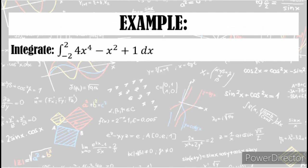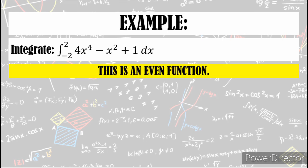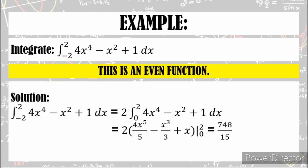Let's have some examples. Integrate 4x^4 minus x squared plus 1 dx from negative 2 to 2. First check: this is an even function. So the solution is 2 times the integral of 4x^4 minus x squared plus 1 dx from 0 to 2. By the power rule: 2 times (4x^5 over 5 minus x cubed over 3 plus x), evaluated from 0 to 2. Substituting the limits, the answer is 748 over 15.